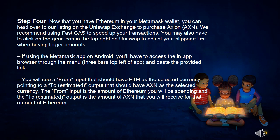If using the Metamask app on Android, you'll have to access the in-app browser through the menu — 3 bars top left of app — and paste the provided link. You will see a 'from' input that should have ETH as the selected currency, pointing to an estimated output that should have AXN as the selected currency. The 'from' input is the amount of Ethereum you will be spending, and the estimated output is the amount of AXN that you will receive for that amount of Ethereum.